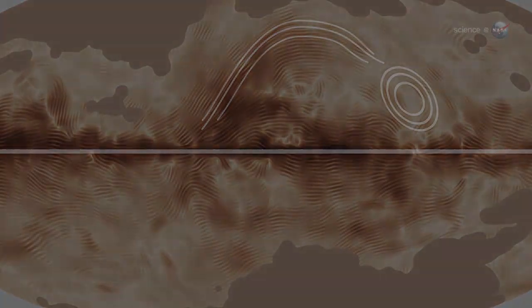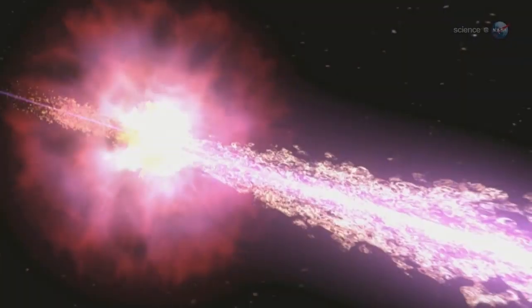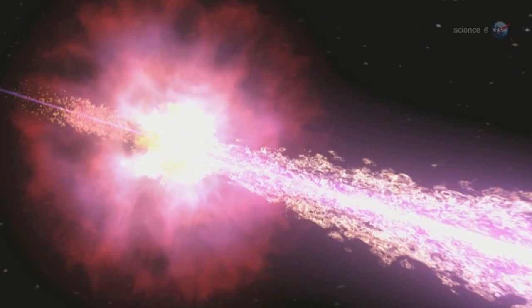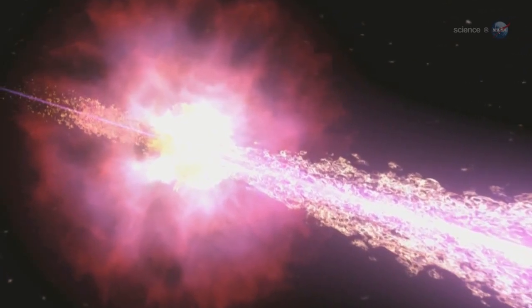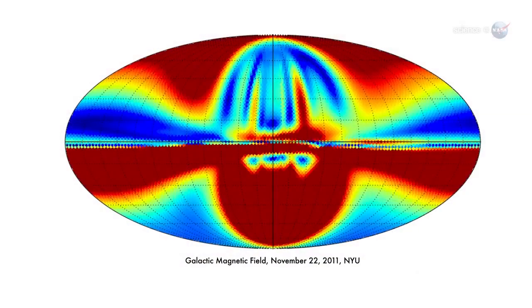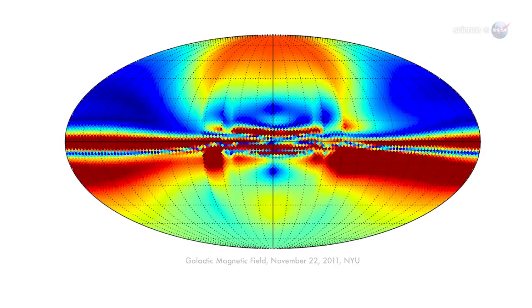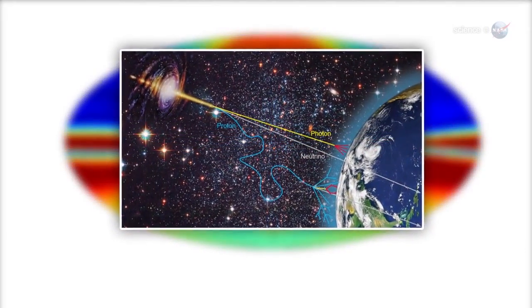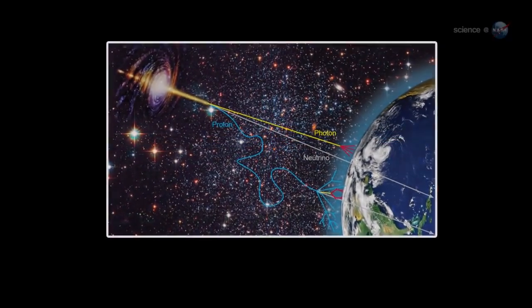Mapping these details is important. For one thing, notes Ferriere, it helps us understand very high-energy cosmic rays. These mysterious particles are deflected by the Milky Way's magnetic field, tracing them back to their point of origin requires knowing that field's morphology.